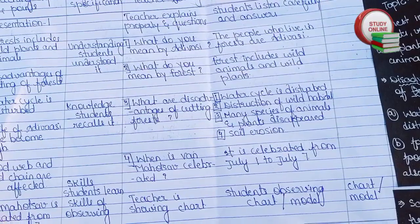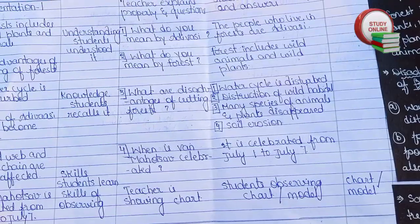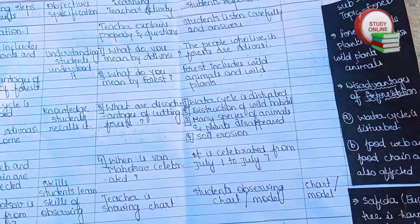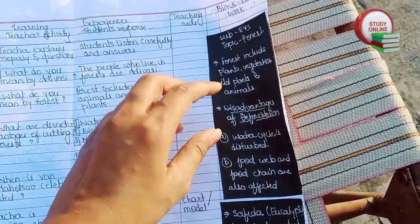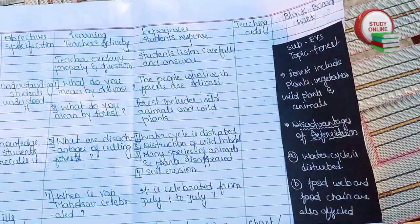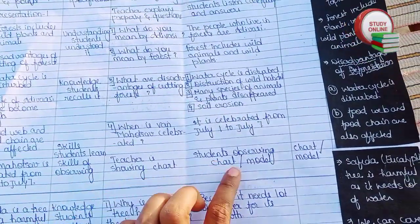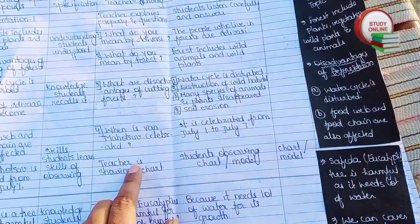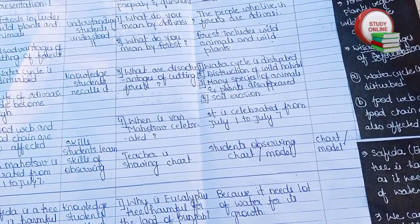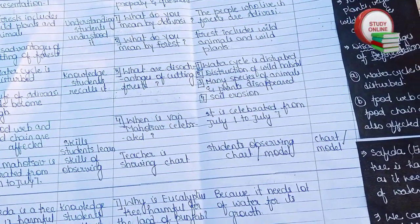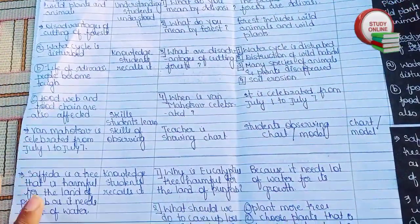After explaining for four to six minutes, we have to ask questions to students. I have added four questions here, along with the answers we are expecting from students. For blackboard work, whatever we are going to write on the blackboard, we write the same thing here as well. For skills, after explaining everything properly, the teacher has to once again explain using teaching aids like a black model, flex chart, or chart.